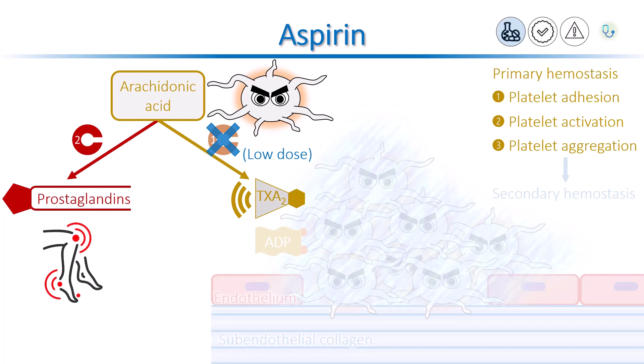When we give low dose aspirin, the COX-1 pathway is blocked, and less thromboxane A2 is produced. Less thromboxane A2 means decreased platelet activity and decreased platelet aggregation, thus preventing further clot formation and further clot propagation. It has no effect on clots that are already formed.